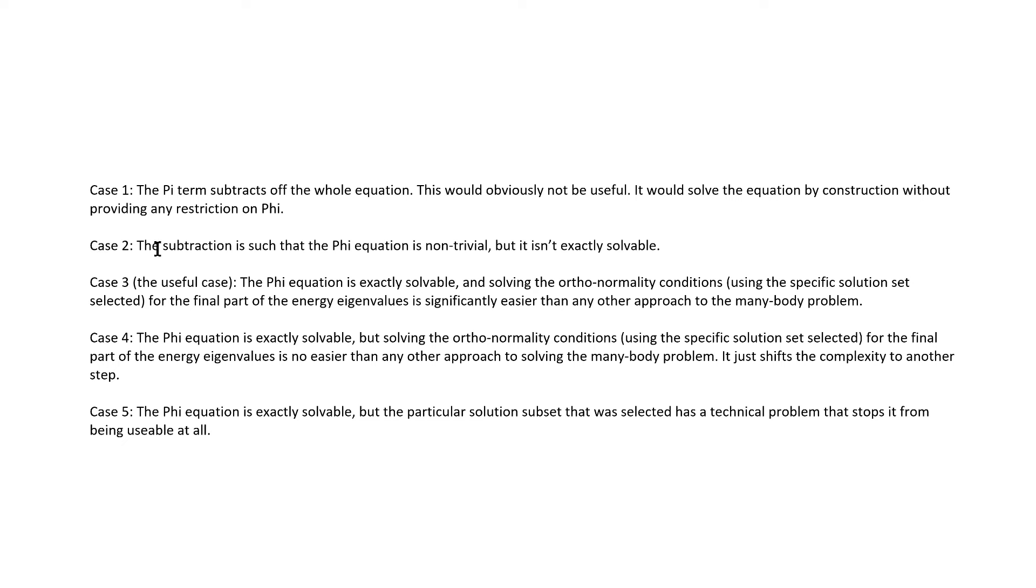The second possibility is that the subtraction is such that the phi equation is non-trivial but isn't exactly solvable. That would mean you'd still have to use numerical methods on the phi equation, which would probably stop you from having much of an improved situation relative to normal approaches to the quantum Coulombic many-body problem. Case 3 is the one we hope for. The phi equation is exactly solvable, and solving the orthonormality conditions using the specific solution set selected for the final part of the energy eigenvalues is significantly easier than any other approach to the many-body problem.